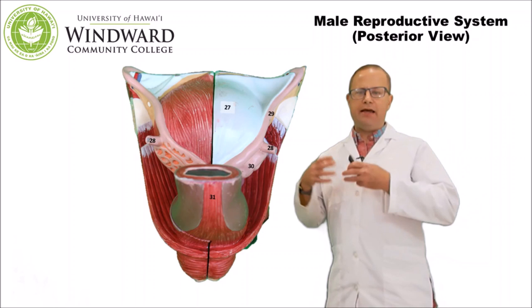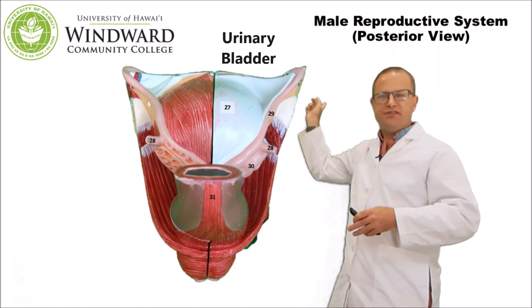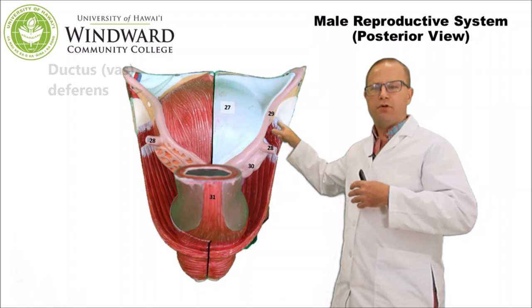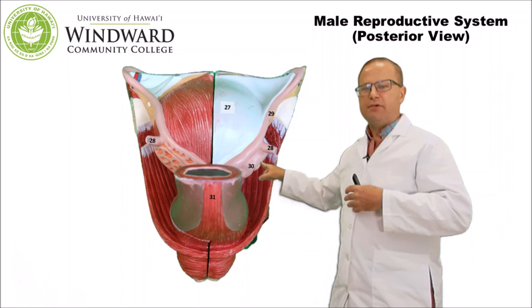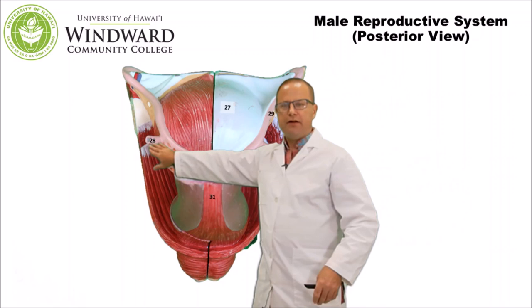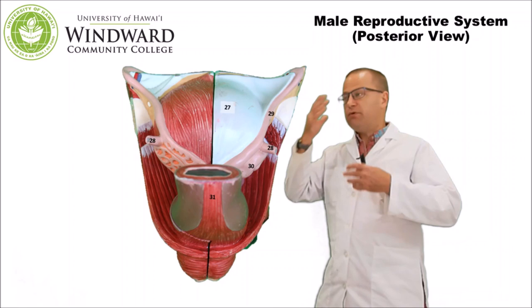Now looking at a posterior view of the male reproductive tract, we can see the urinary bladder covered by peritoneum, and on either side are the vas deferens or ductus deferens, transporting sperm from the epididymis and testis up toward the ejaculatory duct. Here we can see the ampulla of the vas deferens, and also the seminal vesicle, which like the prostate gland produces secretions found in seminal fluid. Also visible are the ureters, which transport urine from the kidneys into the urinary bladder — not part of the reproductive system, just pointed out for reference.